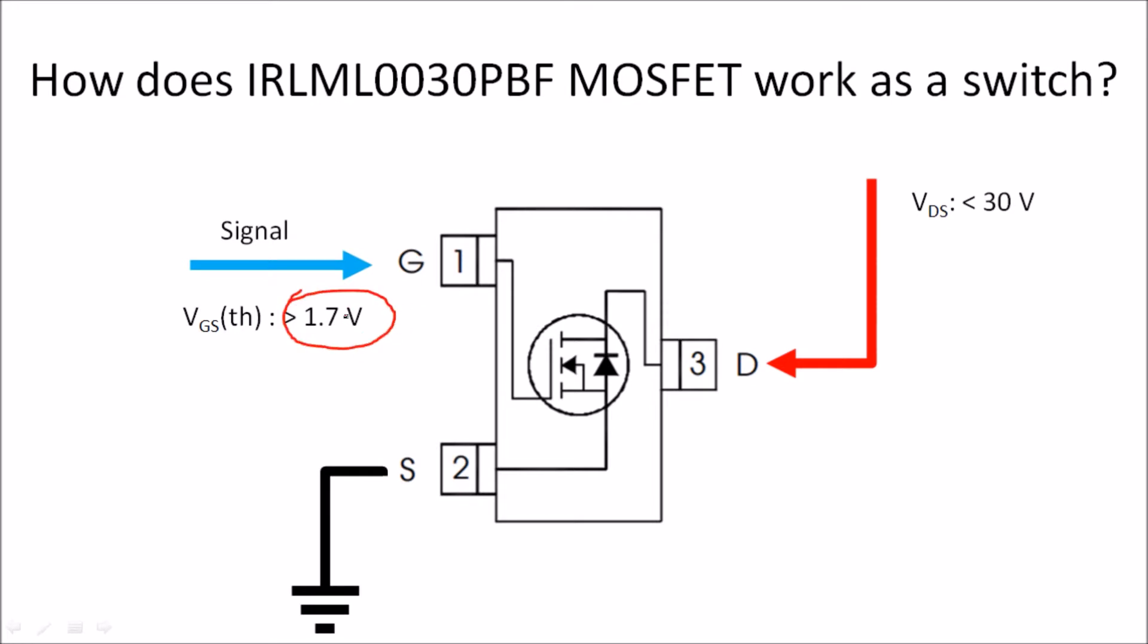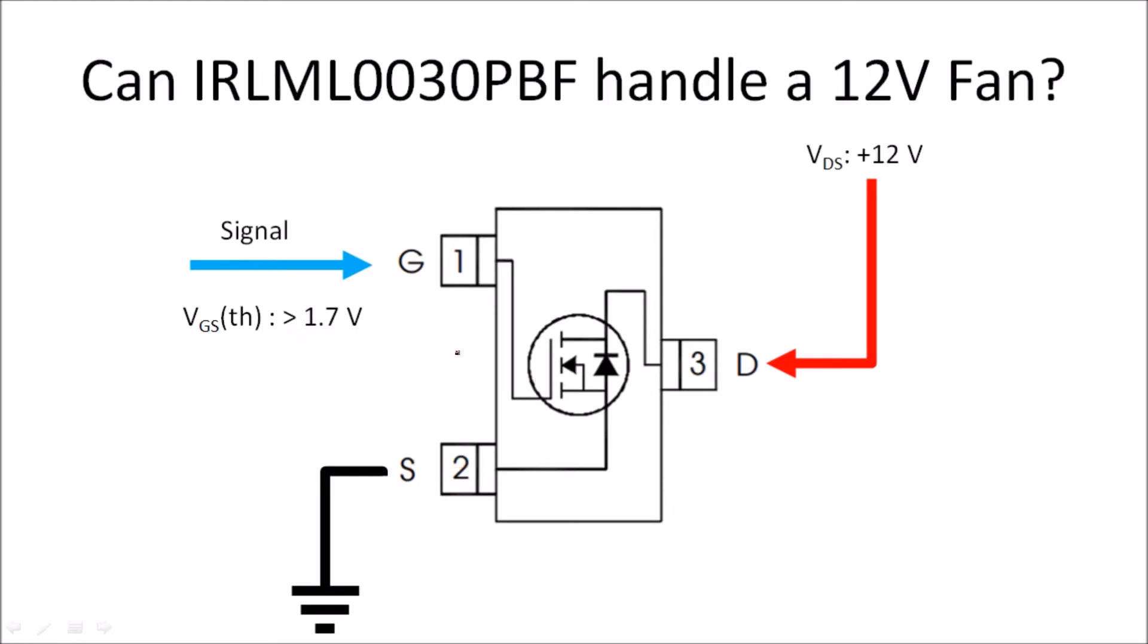It could be from a microcontroller. A microcontroller sends out 3.3 volt signals as on using digital write command, and Arduino sends a 5 volt signal as a digital on signal. So as long as the value is about 1.7 volts, what happens is current flows from the drain to source.